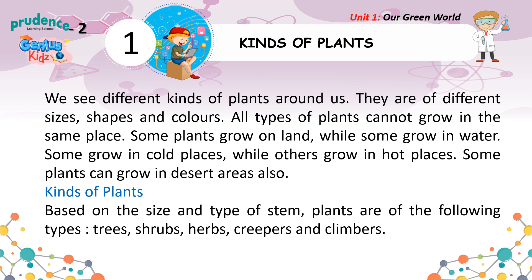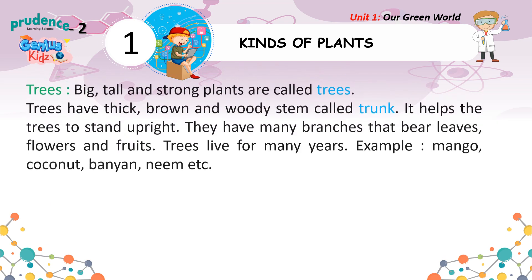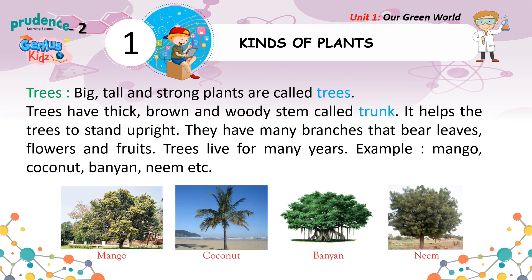Kinds of Plants: Based on the size and type of stem, plants are of the following types — Trees, Shrubs, Herbs, Creepers and Climbers. Big, tall and strong plants are called trees. Trees have a thick, brown and woody stem called trunk. It helps the trees to stand upright. They have many branches that bear leaves, flowers and fruits. Trees live for many years. Examples: Mango, coconut, banyan, neem, etc.